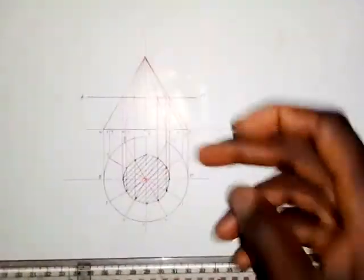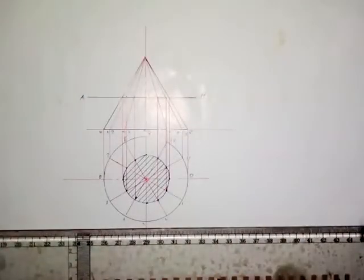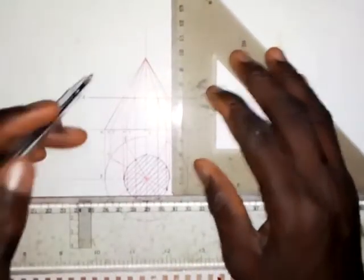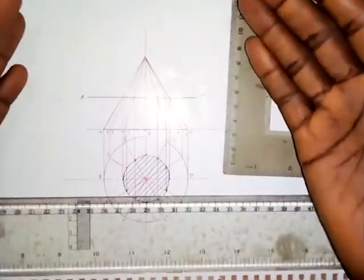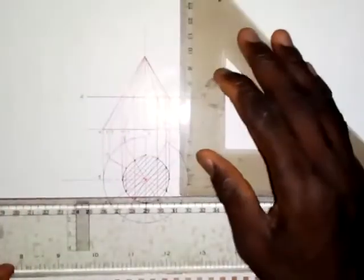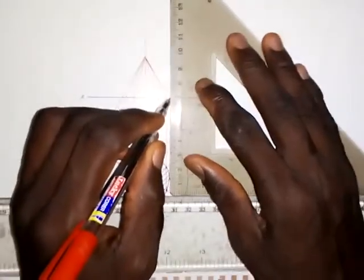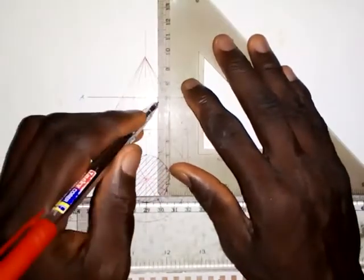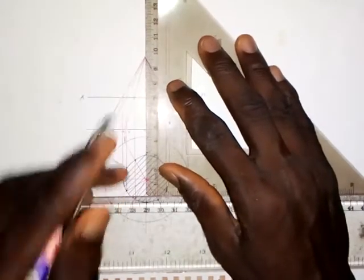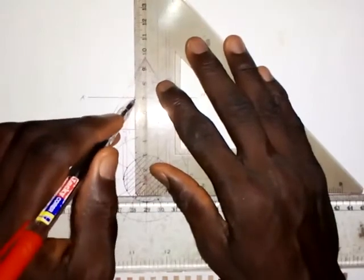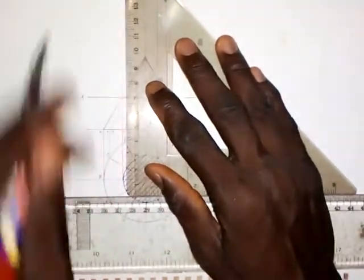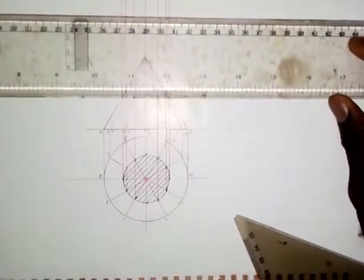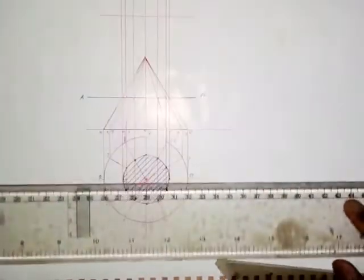Now, what will be the true shape of this surface? The lines used to produce the true shape are always perpendicular to the cutting plane. Using a set square, draw vertical projection lines upward from each point: zero, points 1 and 11, points 2 and 10, points 3 and 9, points 4 and 8, points 5 and 7, and point 6. Then draw a horizontal reference line with the T-square.